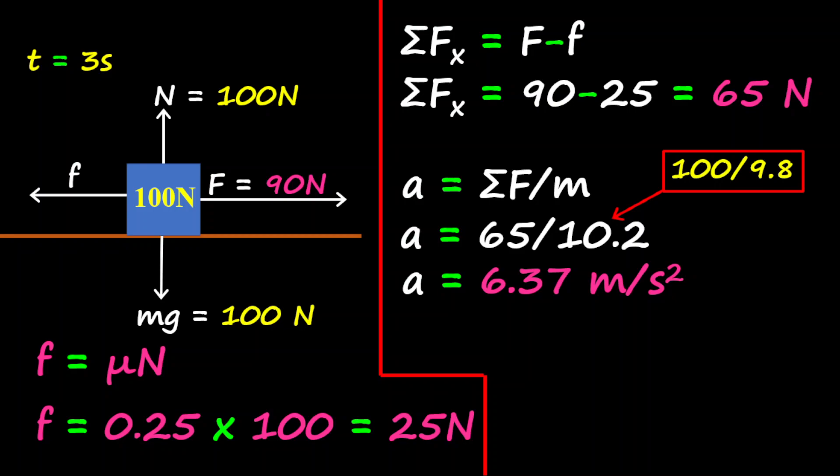All right, the next step, since we have acceleration and we have time, we can now find our velocity. And velocity is equal to acceleration times time.